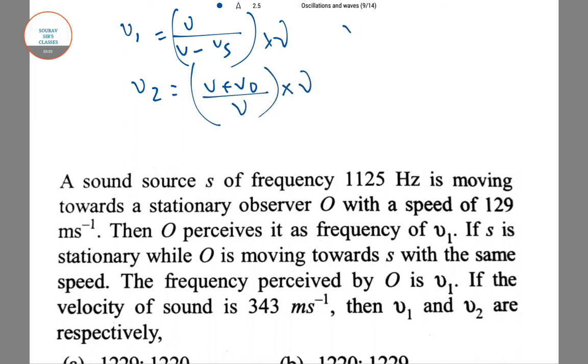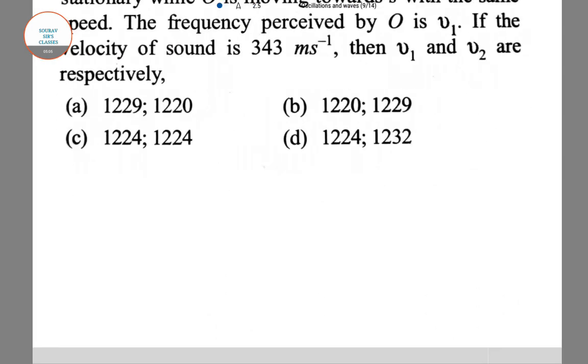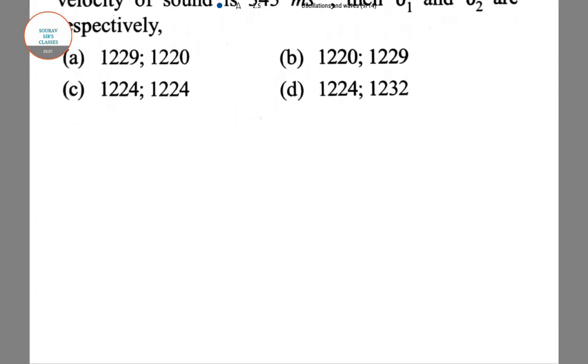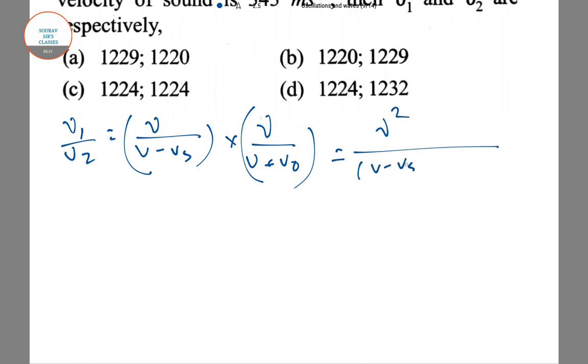Now all you have to do is find ν1/ν2 = (V/(V - Vs)) × (V/(V + V0)). That is V²/[(V - Vs)(V + V0)]. Now you have to put all the values: 343² divided by (343² - 29²). You can calculate this will become 1.007.